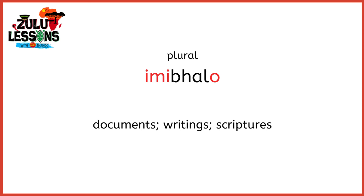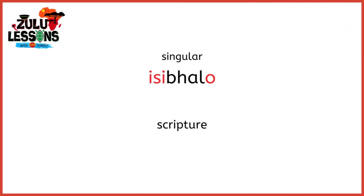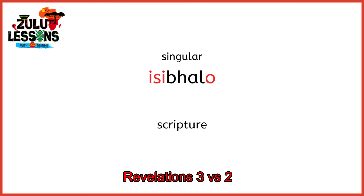Here is another one: ISIBALO. That's a class 4 noun, and it means scripture — only a scripture. We put ISI at the beginning as the prefix. For example: ISIBALO SITHOLAKALA ENCWADINI YESAMBULO ISAHLUKO SESITATU IVESI SESIBILI — meaning this scripture is found in the book of Revelations, chapter 3, verse 2.